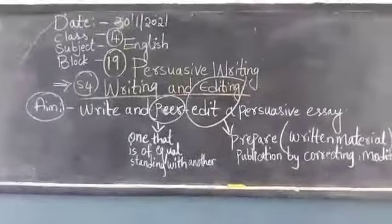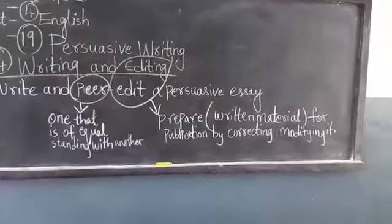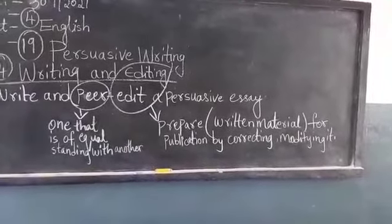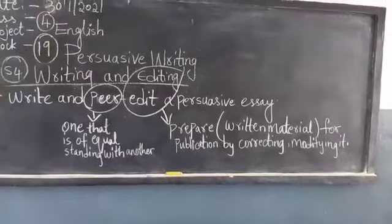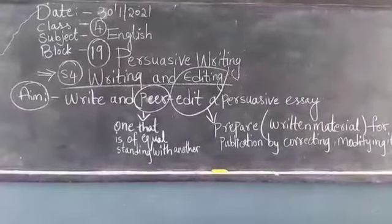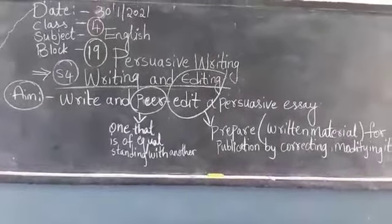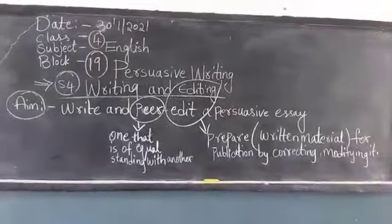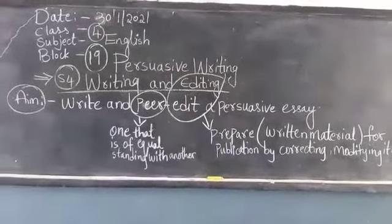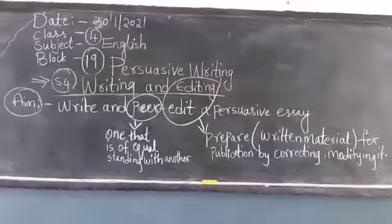What do you mean by writing? You all know what do you mean by writing? Editing or edit means what? See here, the meaning I have written. Preparing written matter for publication by correcting or modifying it. By doing correction is known as editing. Next, what do you mean by peer? One that is of equal standing with another — means which are both equal. That is known as peer. Now what do you mean by writing and editing?